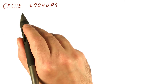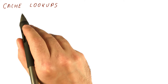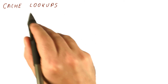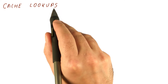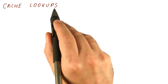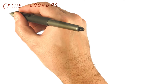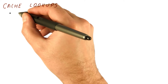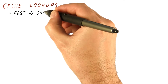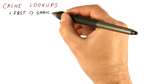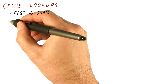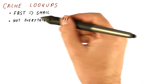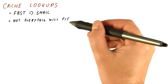Now that we know that a cache is a small memory inside our processor where we are trying to find the data before we go to the main memory, let's recap what we need out of a cache. We need it to be fast, which means it has to be small. Because it's small, not everything will fit.